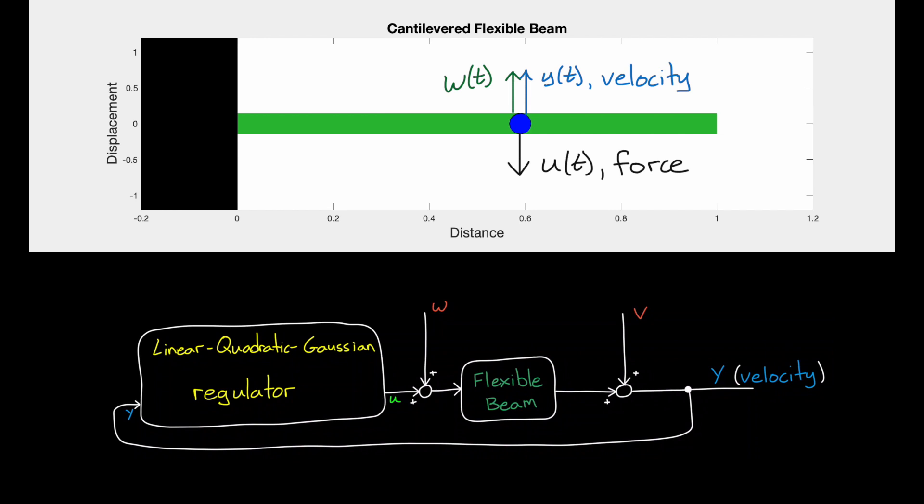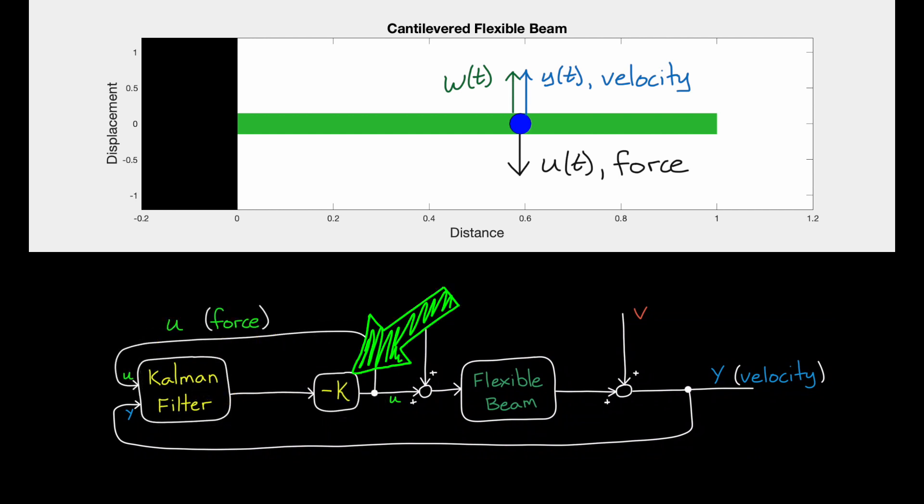In this example, the disturbance, the input force, and the measured velocity are all co-located at this point. Our goal is to develop a feedback controller that can regulate this system by responding to and rejecting the external disturbances to reduce vibrations in this beam. The way we're going to approach this problem at first is to develop a linear quadratic Gaussian controller.